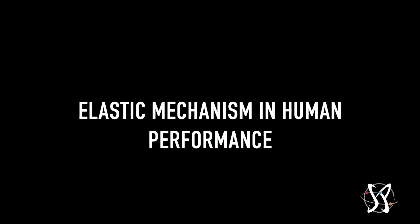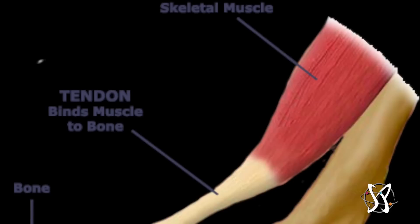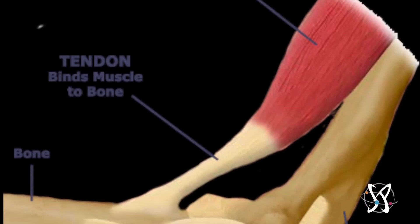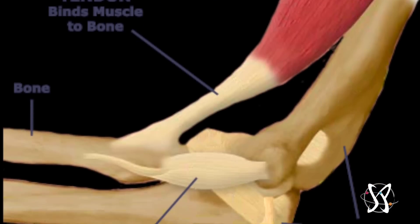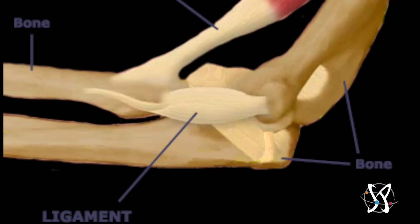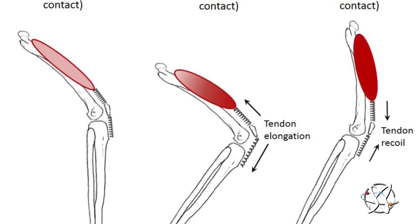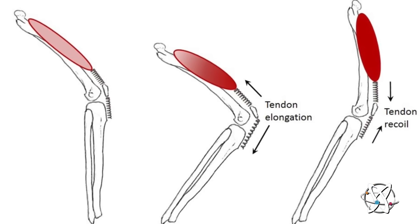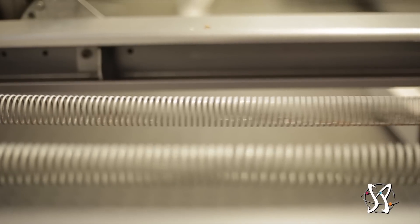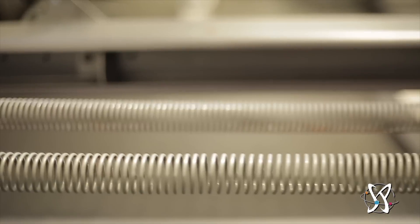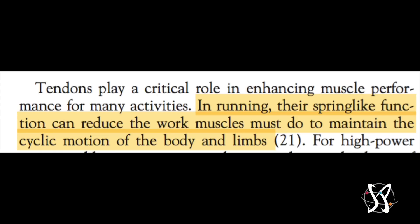In this video we're going to be primarily focused on how the elastic mechanism of the tendons influences performance. Tendons are dense connective tissues that connect muscles to bone. Our tendons behave elastically — when they're put on stretch, they store elastic energy like a spring, which allows us to perform a lot more efficiently.